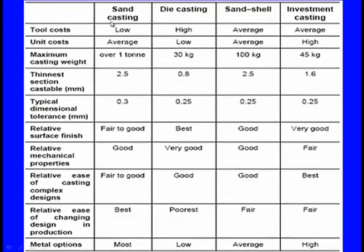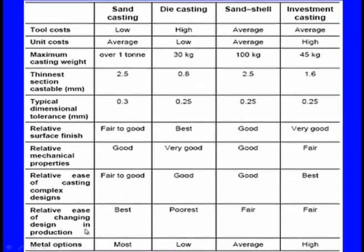Now let us see the comparison of different casting methods. We have taken sand casting, die casting, sand shell, and investment casting for comparison. The comparative features include: tool costs, unit costs, maximum casting weight, thinnest section possible, typical dimensional tolerance, relative surface finish, relative mechanical properties, relative ease of casting complex designs, relative ease of changing design in production, and metal options.